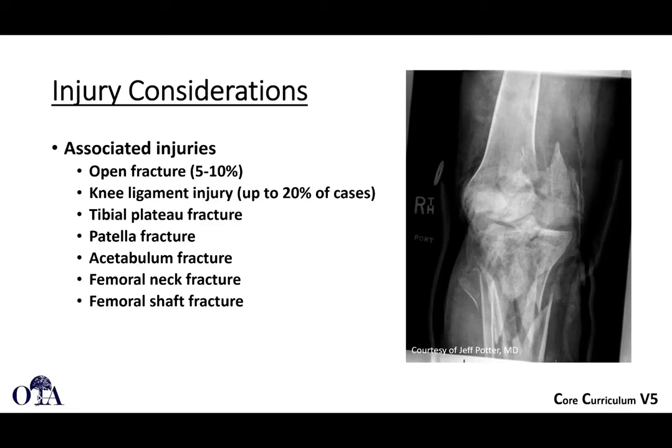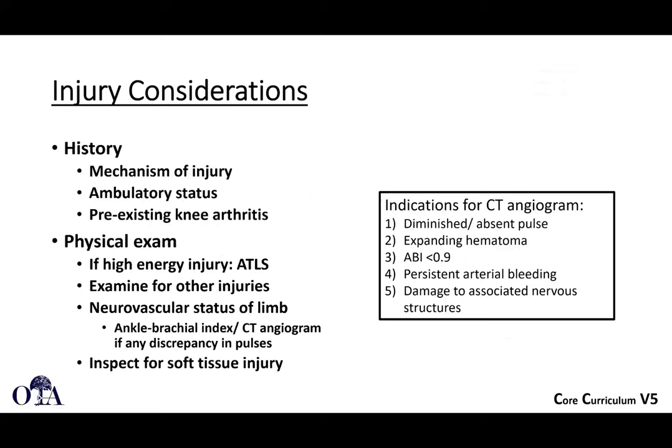These can be open fractures in 5–10% of cases. Occasionally there are concomitant knee ligament injuries, as well as tibial plateau fractures, acetabulum, or patella fractures. Consider the patient's ambulatory status and pre-existing knee arthritis. On physical exam, run through ATLS, get a good neurovascular status, check for potential arterial injury, and look at soft tissues. If there is concern, such as a diminished pulse or expanding hematoma, consider a CT angiogram, or proceed to the operating room for obvious arterial bleeding.